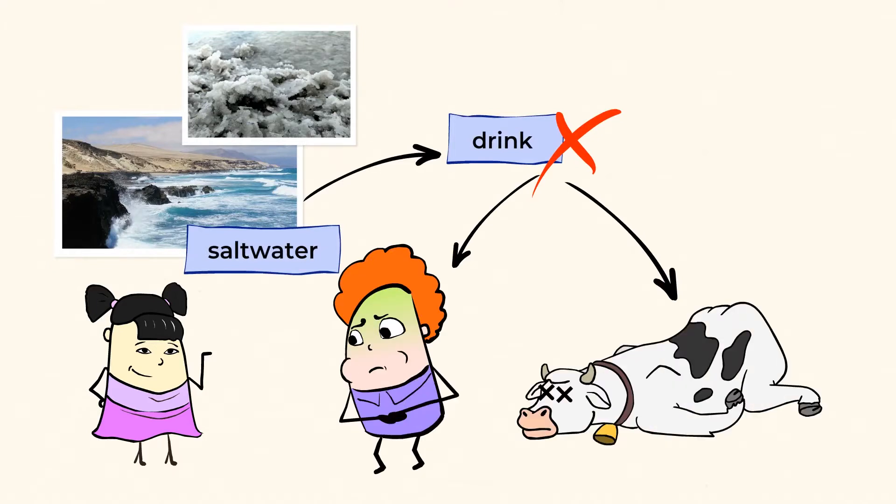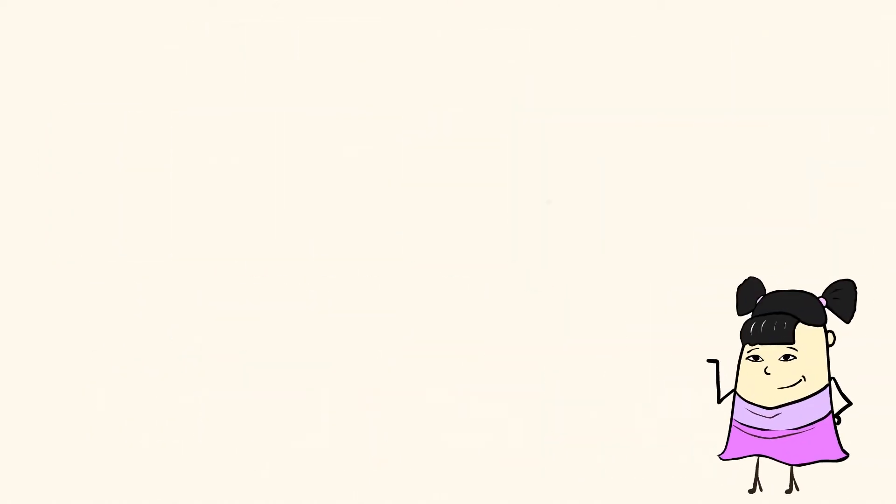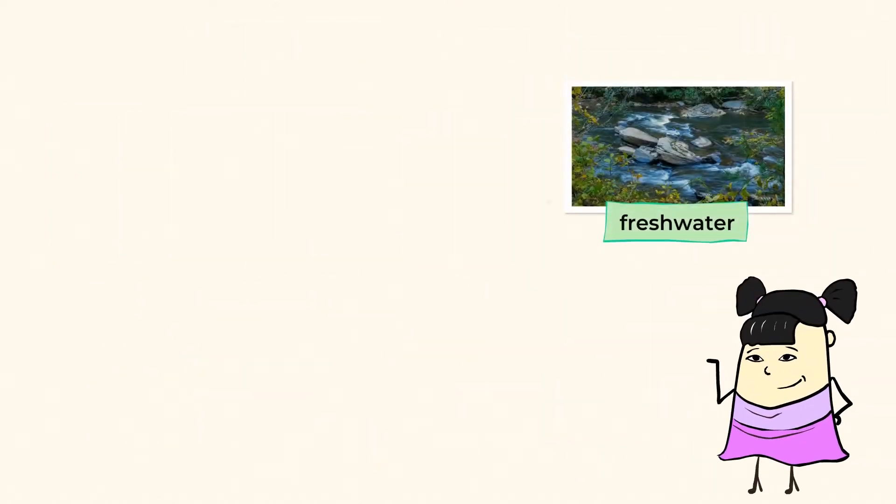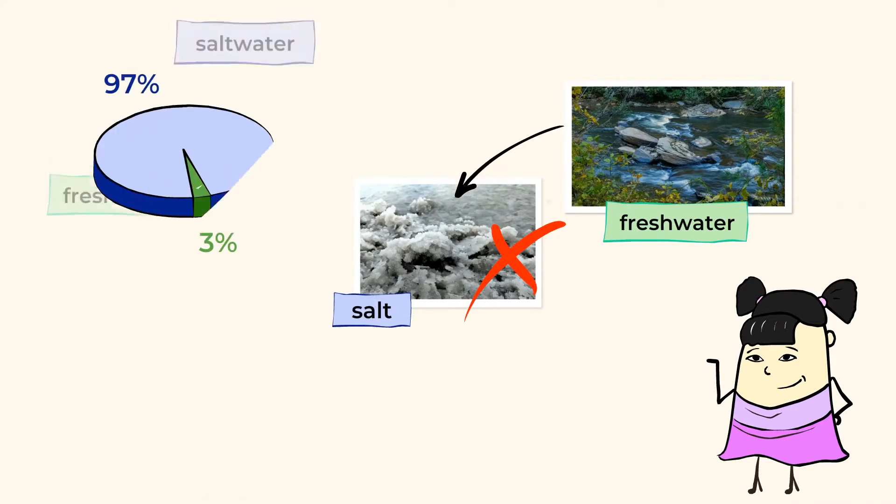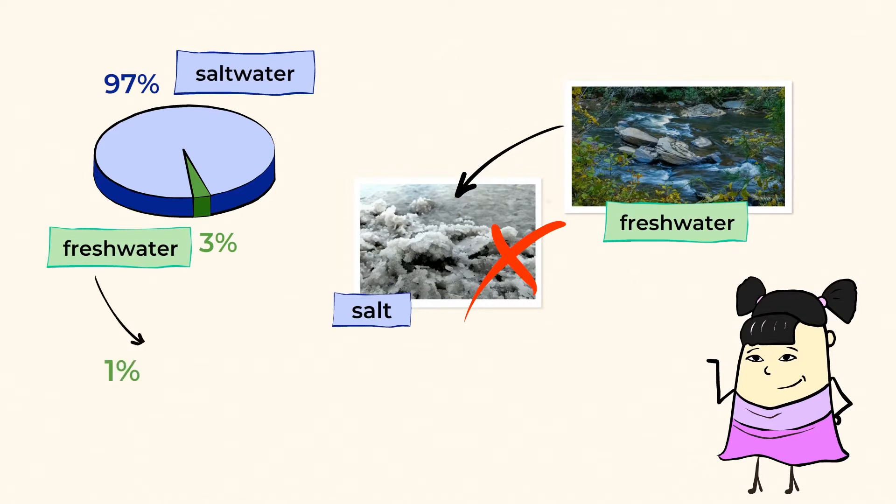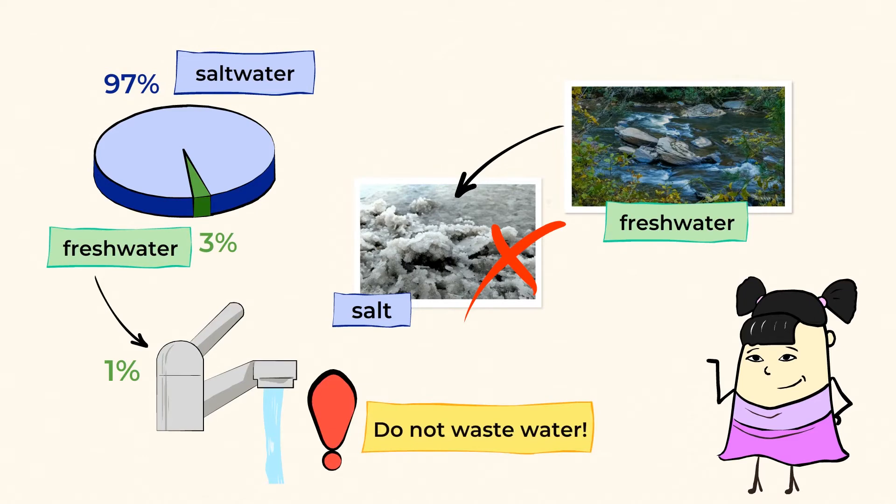Land-dwelling living things, like us, can only drink fresh water. Fresh water is water that does not have a lot of salt in it. Only a very small amount of the water on Earth is fresh, and that's why it's important that humans do their best not to waste water.